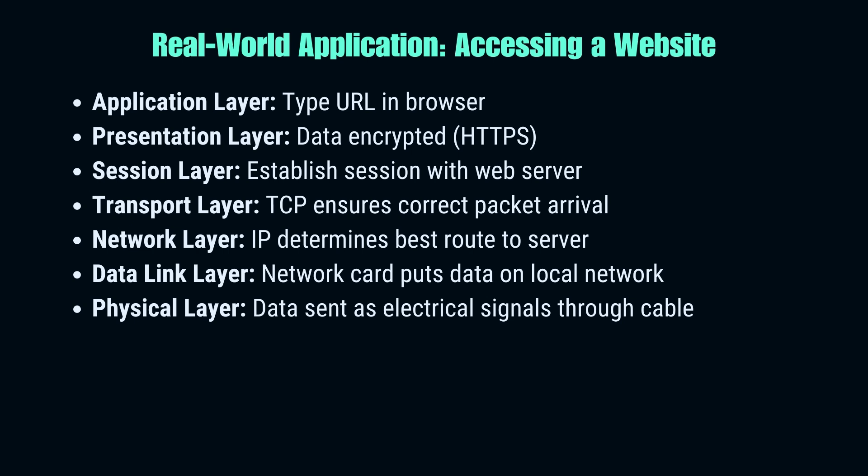Now that we understand each layer, let's see how they all work together when you access a website. You type a URL into your browser — that's the application layer in action. The presentation layer formats your request and may encrypt it if it's a secure site. The session layer establishes a session with the web server. The transport layer breaks your request into manageable packets. The network layer determines the best route for these packets to reach the server. The data link layer gets your data onto your local network. Finally, the physical layer converts your data into signals and sends them out. This whole process happens in reverse on the server side.